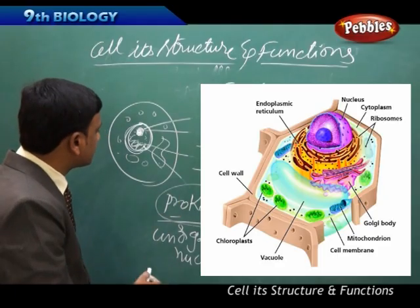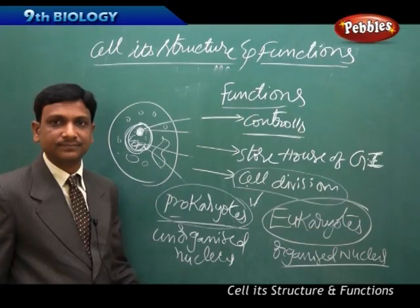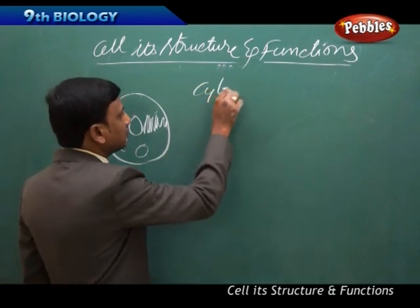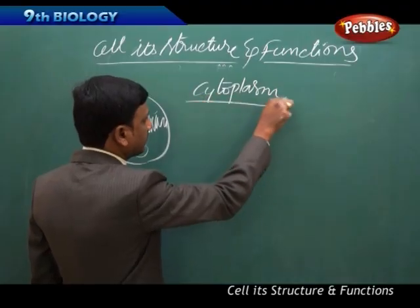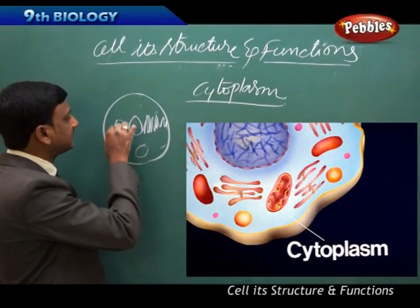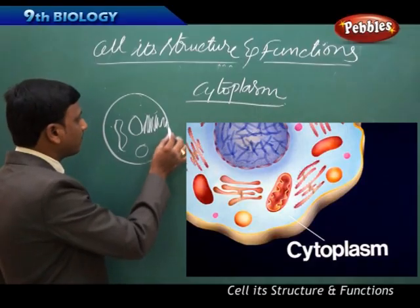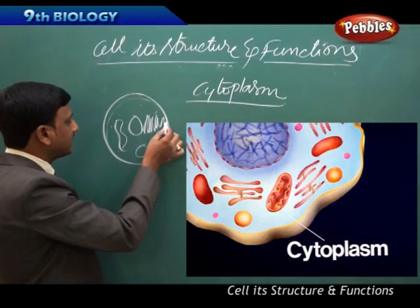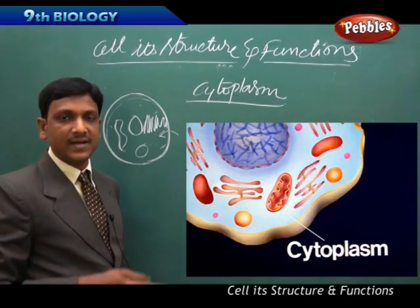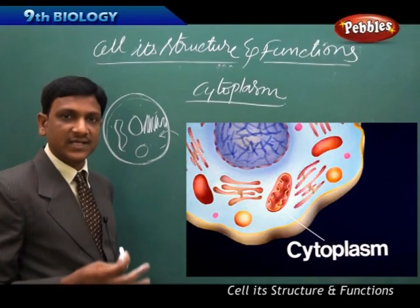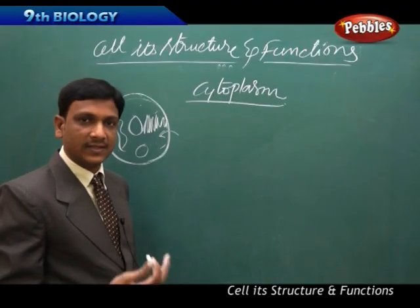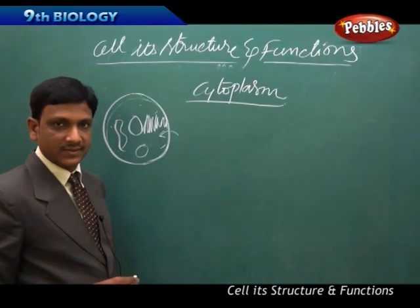Now we are going to talk about another important part of the cell — the cytoplasm. Cytoplasm is the fluid present inside the cell, bound by the cell membrane. The cytoplasm is the medium in which all other cell organelles — like the nucleus, endoplasmic reticulum, Golgi apparatus, and plastids — are floating.